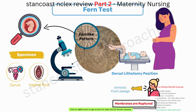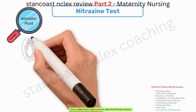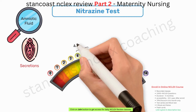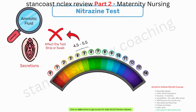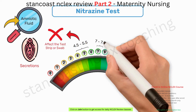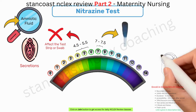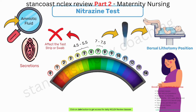The Nitrazine Test is utilized to identify amniotic fluid in vaginal secretions. Vaginal secretions typically have a pH ranging from 4.5 to 5.5, which does not affect the test strip or swab. However, amniotic fluid with a pH ranging from 7.0 to 7.5 will cause the test strip or swab to turn blue. To conduct this test, position the client in the dorsal lithotomy position. Apply the test tape to the fluid and observe for a blue to green, blue to gray, or deep blue color change, indicating the presence of ruptured membranes and amniotic fluid leakage.